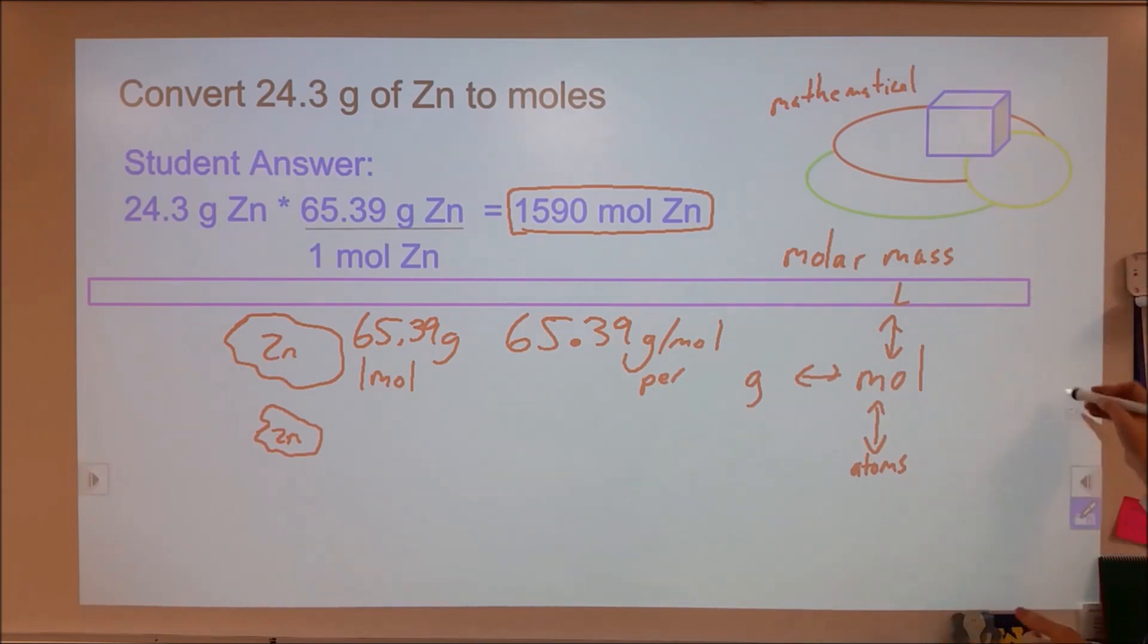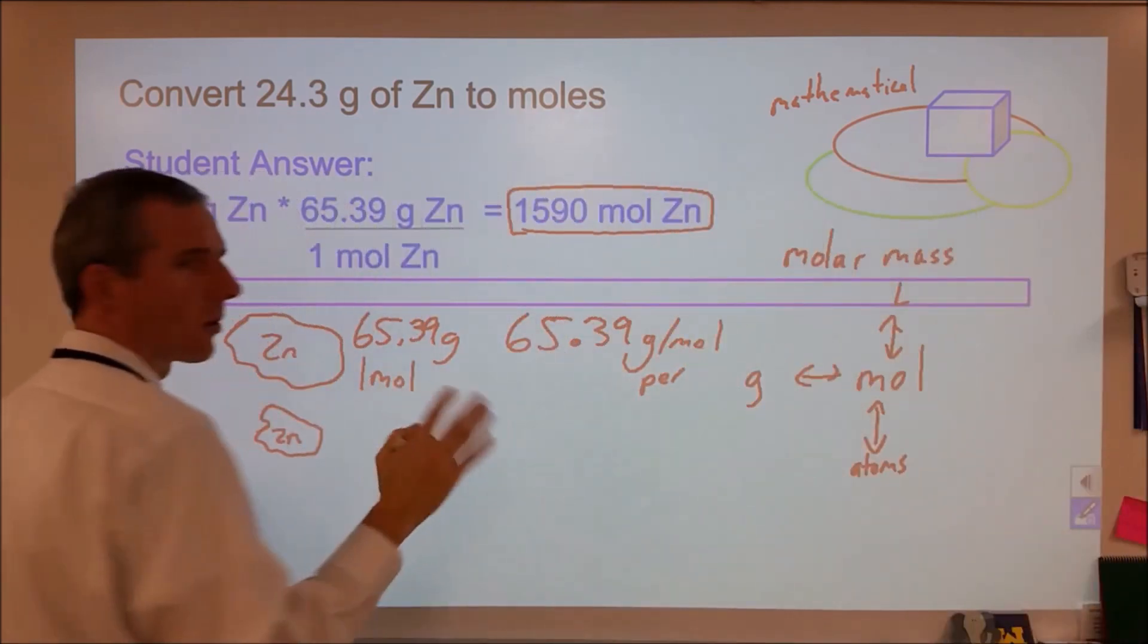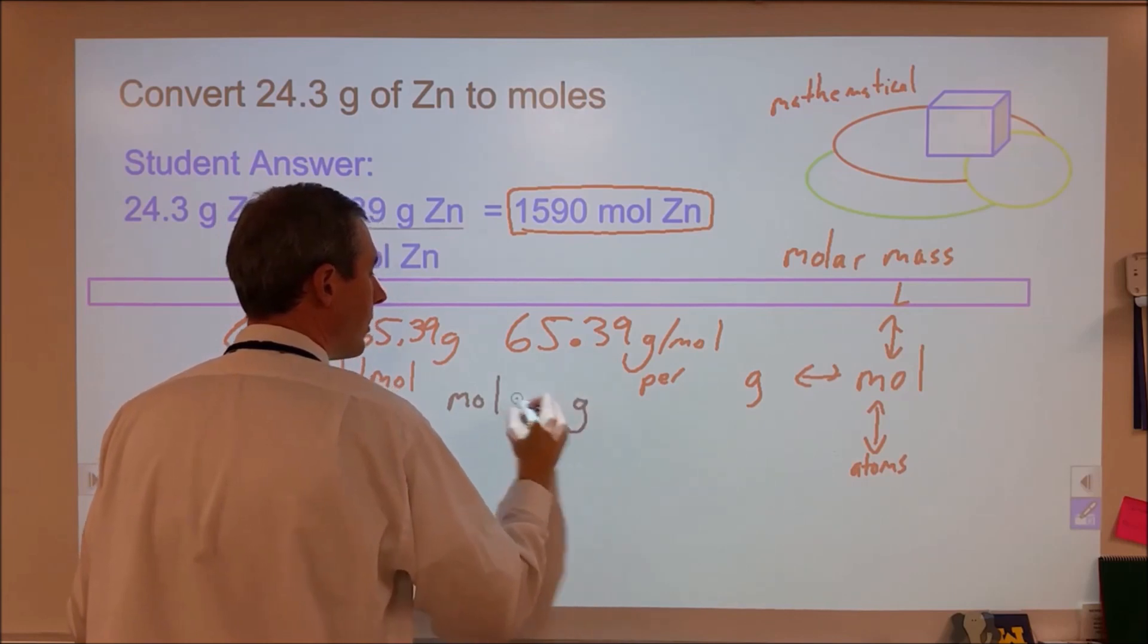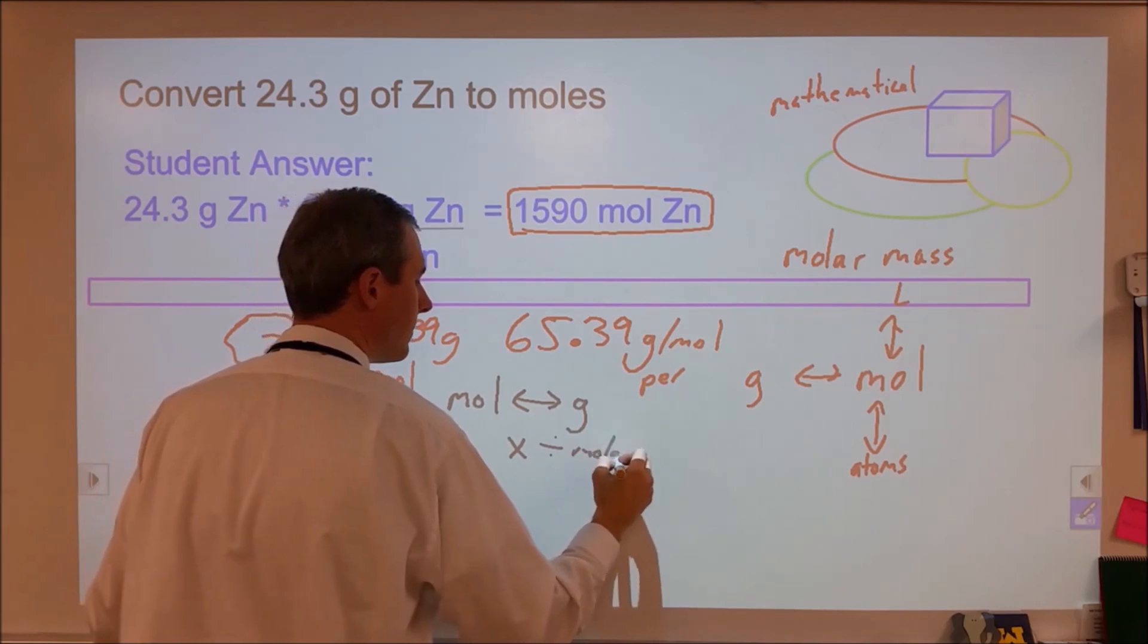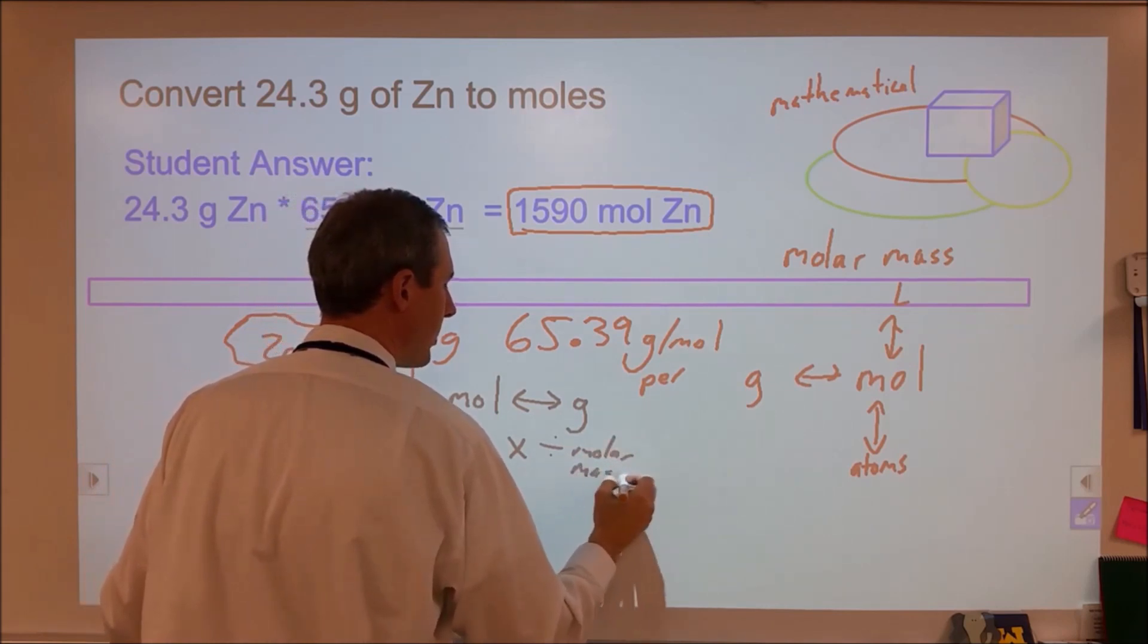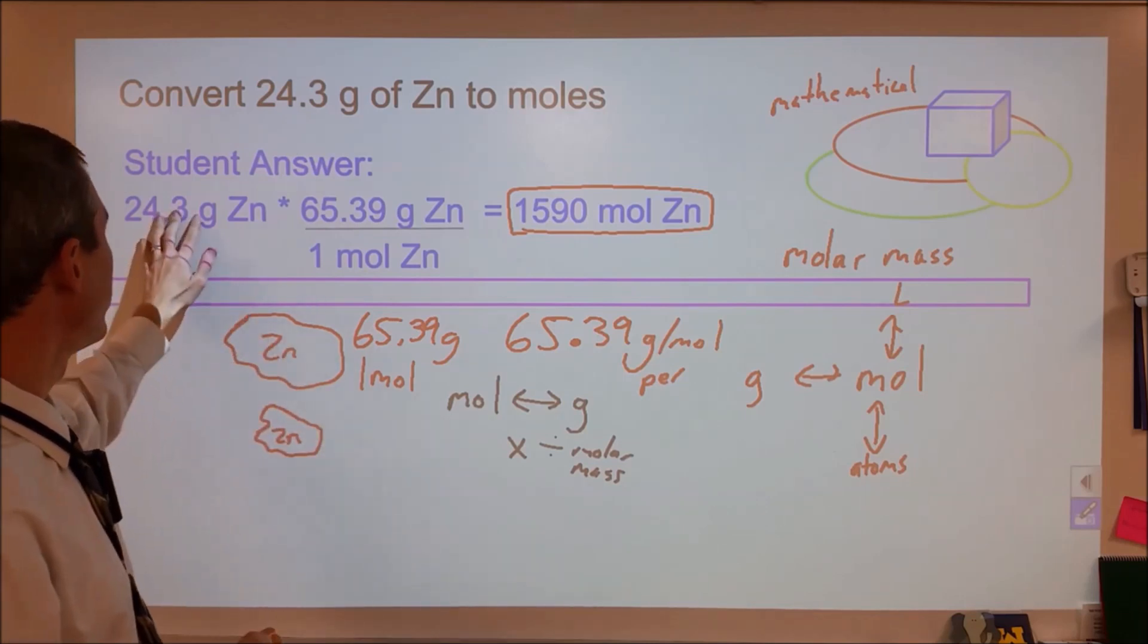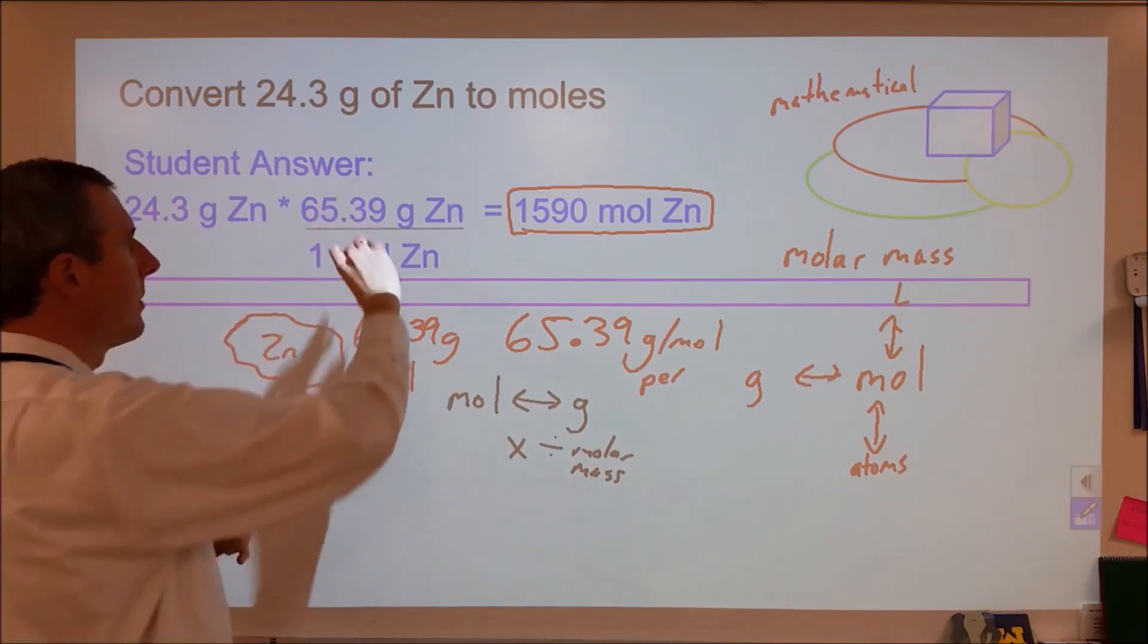So what can you do to fix this? Well, a nice thing you can do to fix this is instead of doing a dimensional analysis for moles to grams, anytime you're changing between moles and grams, you're either going to multiply or divide by your molar mass. So what I recommend instead of this is just start with your given and know that you're either going to multiply or divide this.